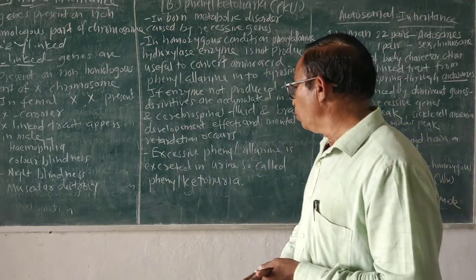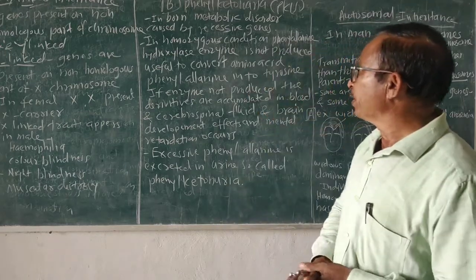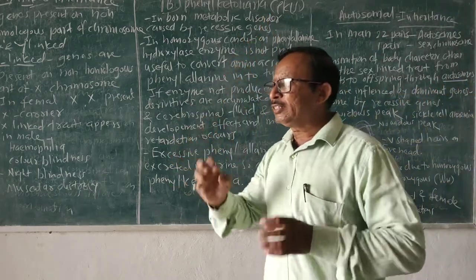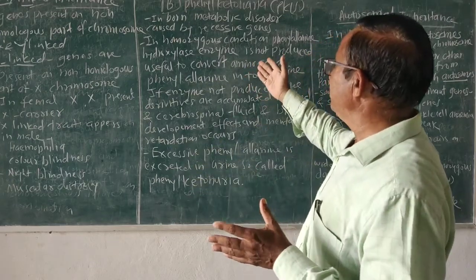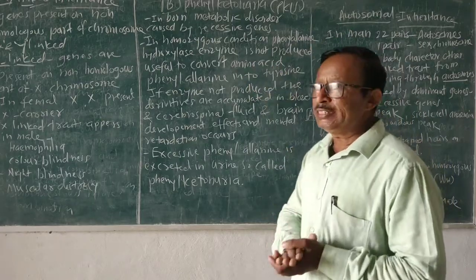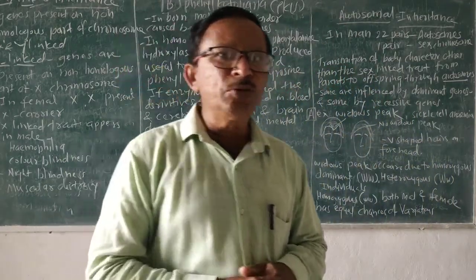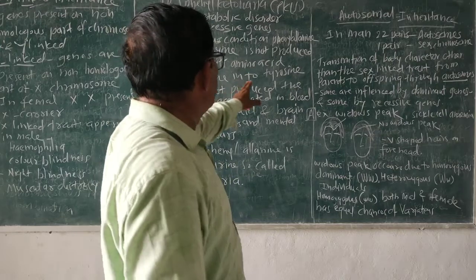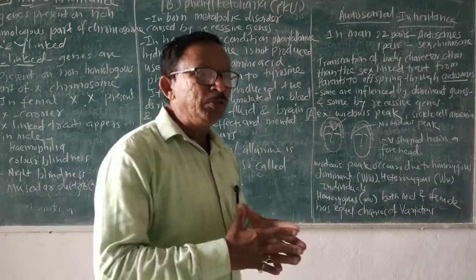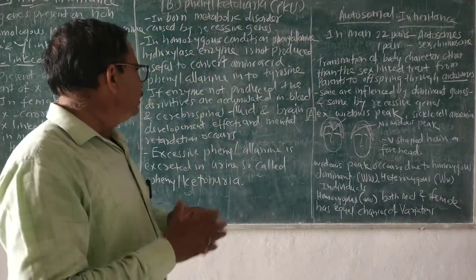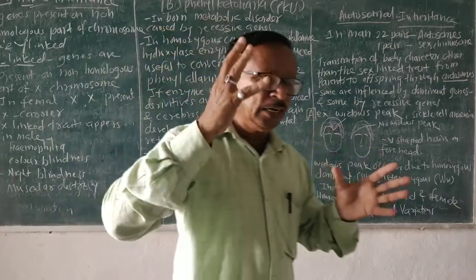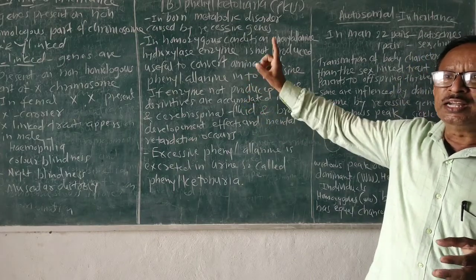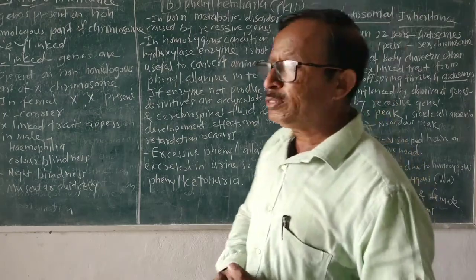So phenylketonuria (P-K-U) is a disease present by birth found in human beings. The enzyme phenylalanine hydroxylase is necessary, but if it is not produced, the amino acid cannot be converted. The derivatives accumulate in the brain and cerebrospinal fluid, leading to mental retardation. This disease occurs due to recessive genes. We have now studied two things: autosomal inheritance and phenylketonuria.